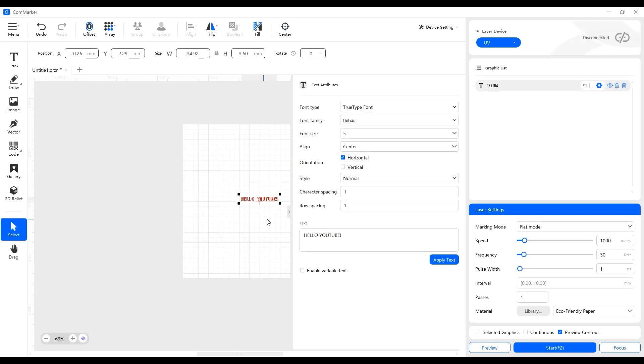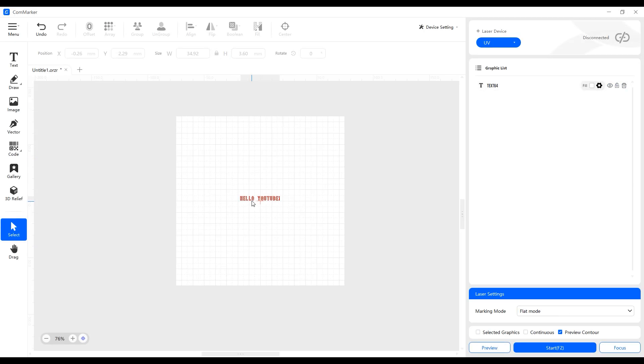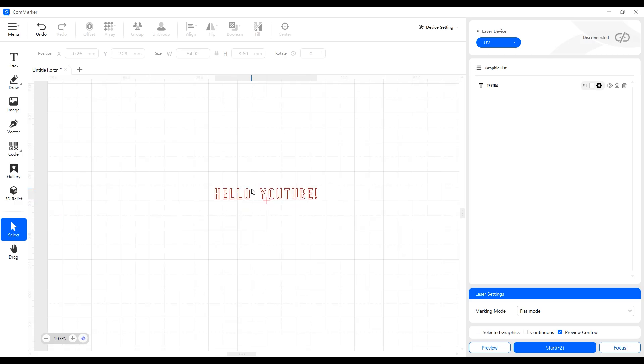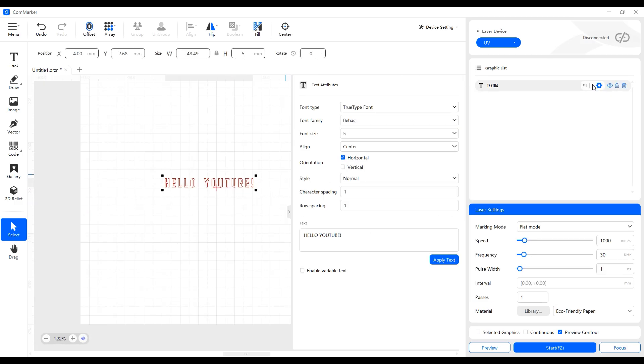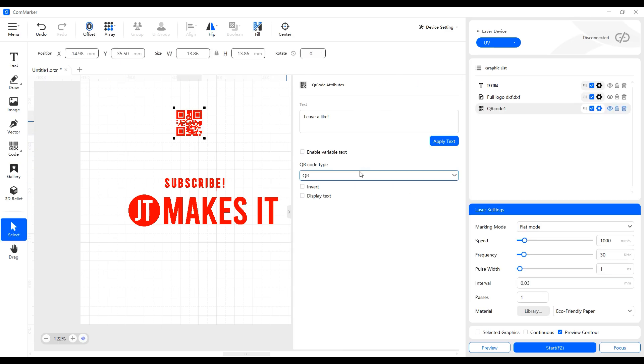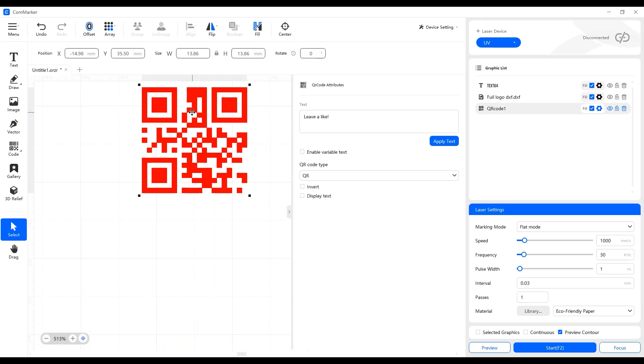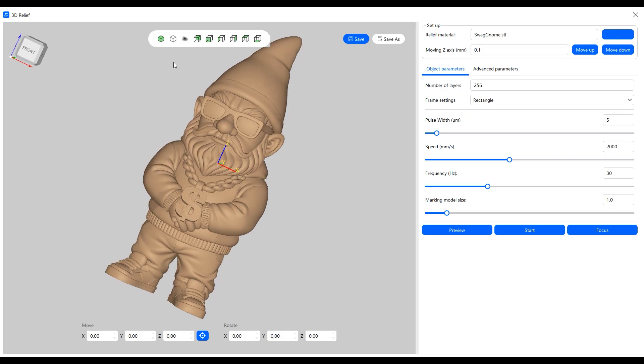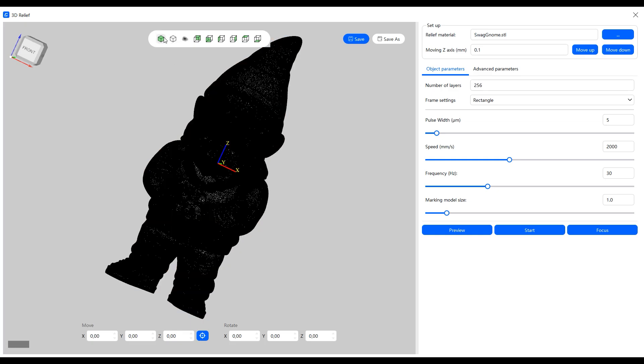The Omni X runs on the new CommMarker Studio software, and I was pleasantly surprised at how easy it is to use. It gives you full control over all your engraving parameters, but it's not overwhelming. There's a QR and barcode generator, a library of shapes, and the highlight for me is how straightforward the 3D relief and embedded glass engravings are to set up. If you prefer LightBurn, that's an option too, since the Omni X is now supported as a GRBL device.